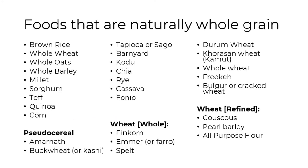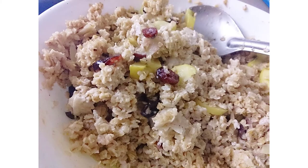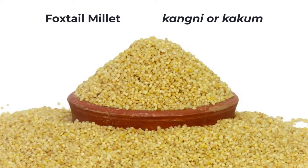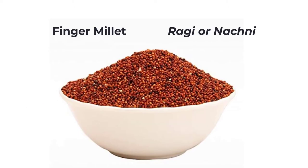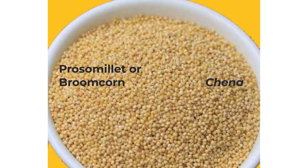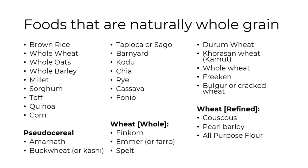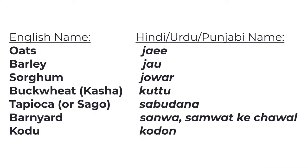There are lots of foods that are naturally whole grain: brown rice, whole wheat, oats, and millets. There are different types of millets — bajra (pearl millet), kangani (foxtail millet), ragi or nachni (finger millet), little millet, and proso millet. There's also sorghum or jowar, and barley — also called jow; look for whole grain barley. Other whole grains include teff, quinoa, corn or makai (like makai di roti), amaranth, buckwheat (kasha), tapioca or sabudana, and barnyard millet.